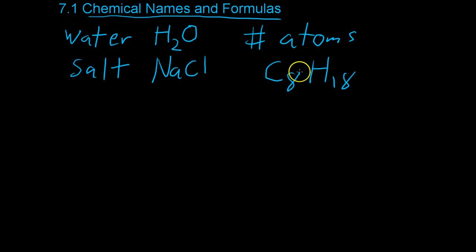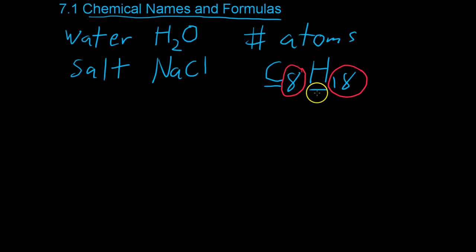you'll note by, first of all, the symbols that it contains carbon and hydrogen. And then if you look at the subscripts, you'll note it contains 8 carbon and 18 hydrogen. And they lay out the formula in this way so that it makes it easy to understand the chemical makeup of a molecule.